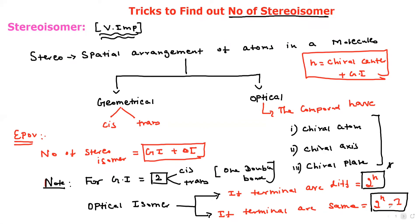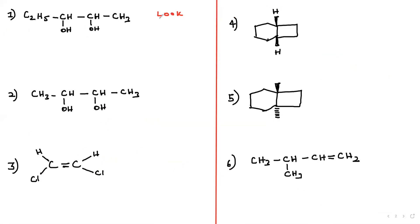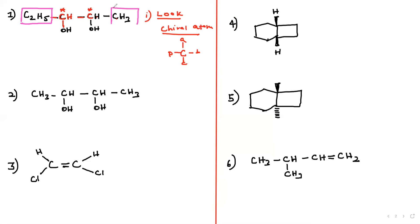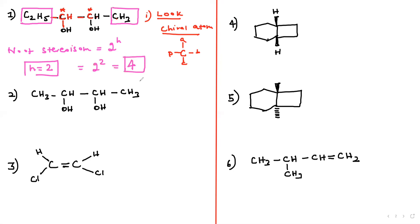Now let's go into the problems. First, find the chiral atom — that is a carbon with four different groups. Looking at the first molecule: one carbon has C2H5, OH, H, and a bulky group — that is chiral. The terminals are C2H5 and CH3, which are different. So n = 2, formula is 2^n = 2^2 = 4 stereoisomers.